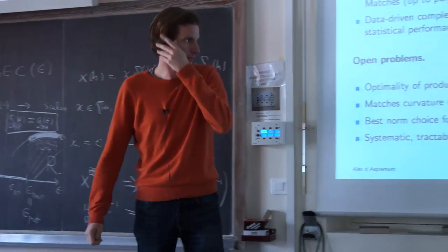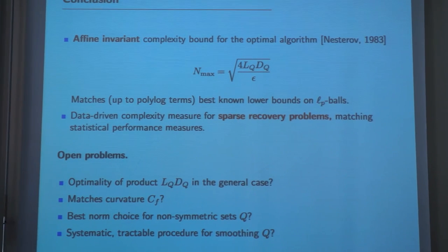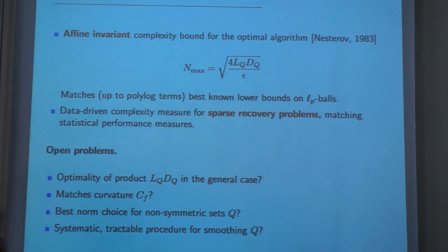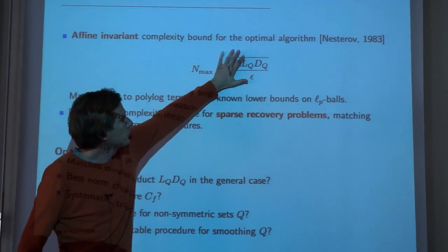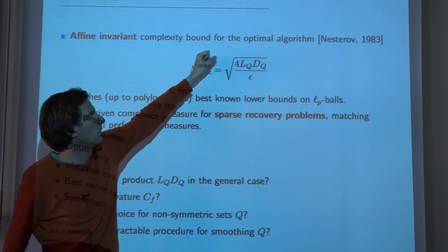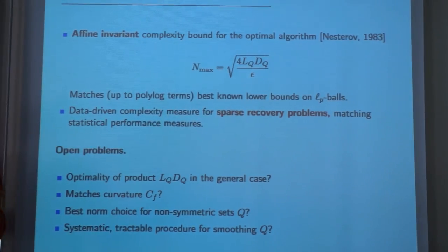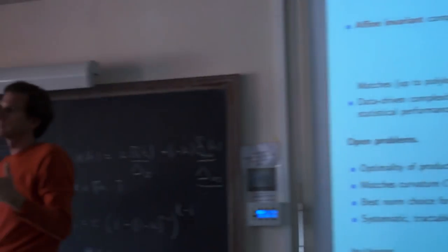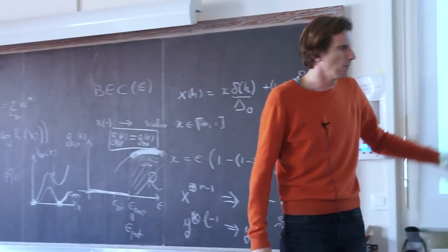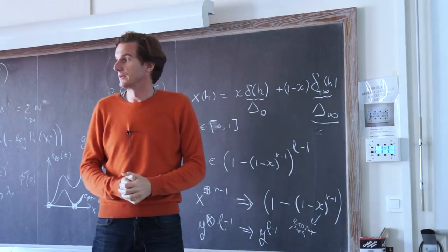To sum up: the idea was to produce data-driven complexity bounds on classical optimization problems. The first result was an affine invariant and in some cases optimal bound on the complexity of Nesterov's optimal method. The second is a direct link between the complexity of compressed sensing problems and their statistical performance. There is a long list of open problems that I'm happy to discuss over whatever drink you like. Thank you.